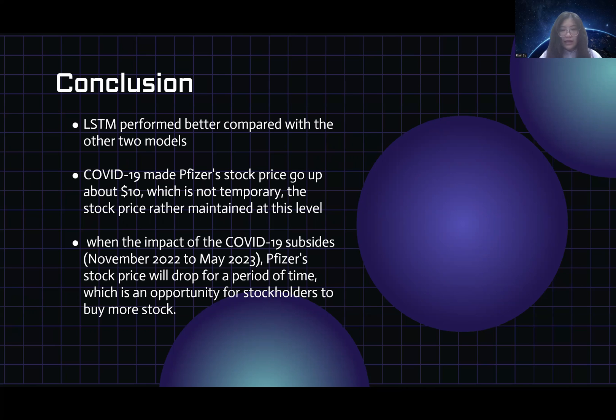And also, in the next two years, the stock price will show a stable pattern, but we can see that as the effect of COVID-19 subsides, the stock price will have a sharp decrease between the end of 2022 to the beginning of 2023. But generally, COVID-19 made Pfizer stock price go up about $10, which is not temporary. The stock price will remain at this level, and the Pfizer company will have some improvement in the next two years.